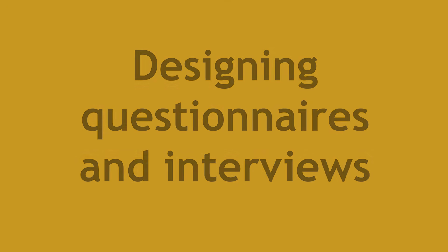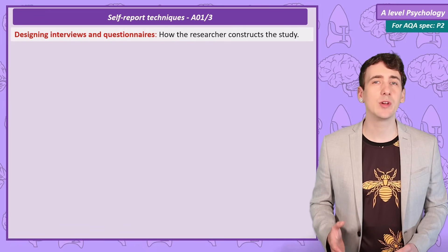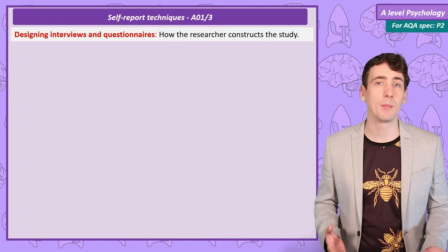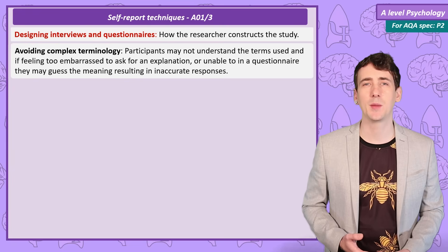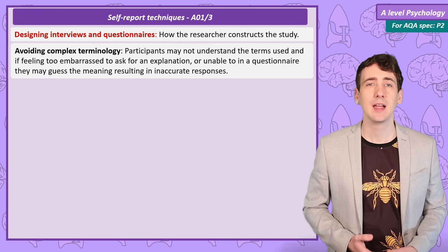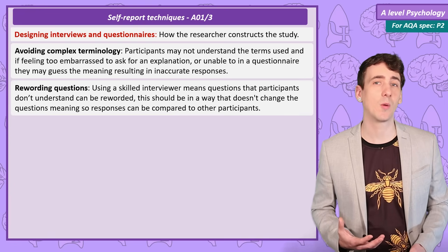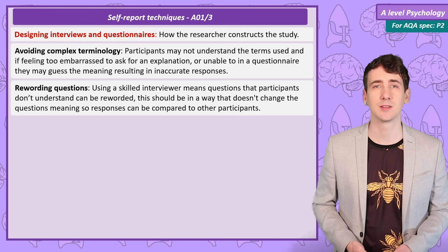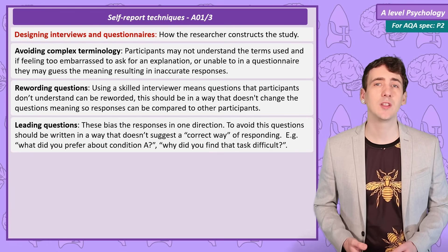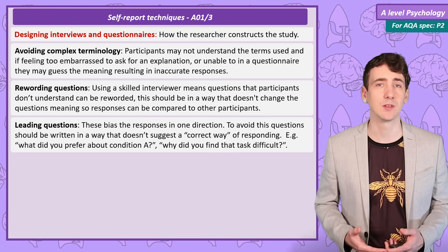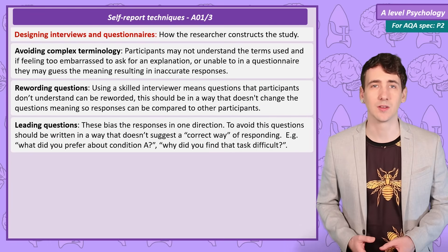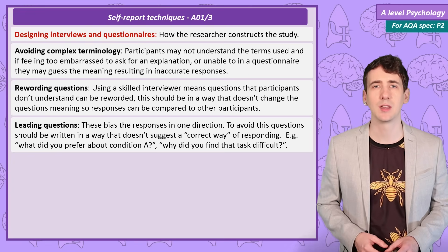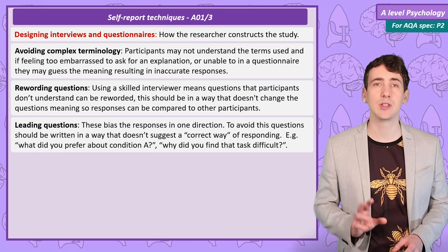Designing questionnaires and interviews. When deciding on questions the researcher needs to make sure they're clear — for example they might try to avoid complex scientific terminology that the participants may not understand. In an interview the interviewer can reword the question to make it more understandable, but that of course is not possible for questionnaires. The researcher also needs to be careful not to use biased questions, otherwise known as leading questions. These questions subtly suggest how the participants should respond, often in a way that will support the researcher's ideas.